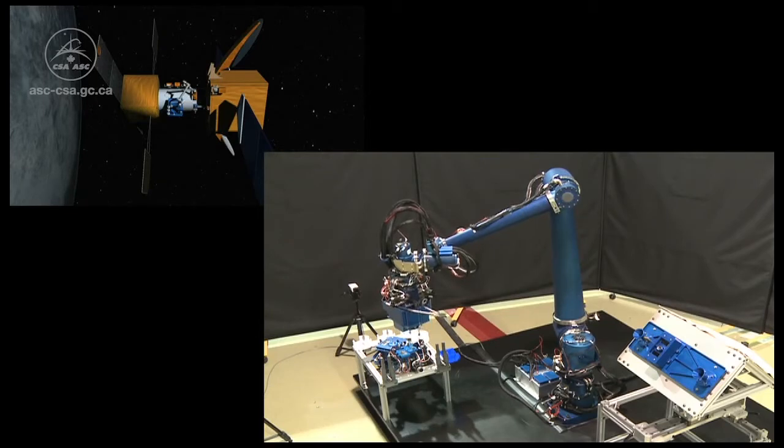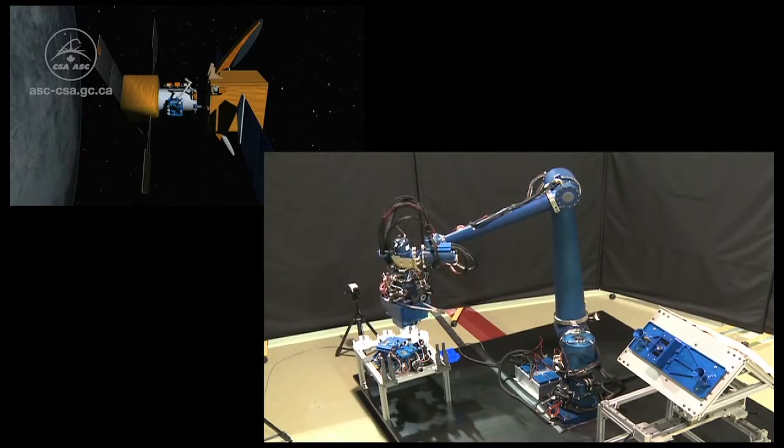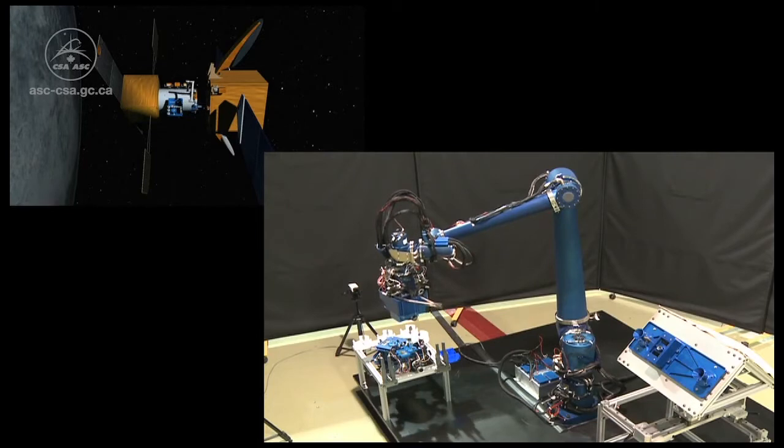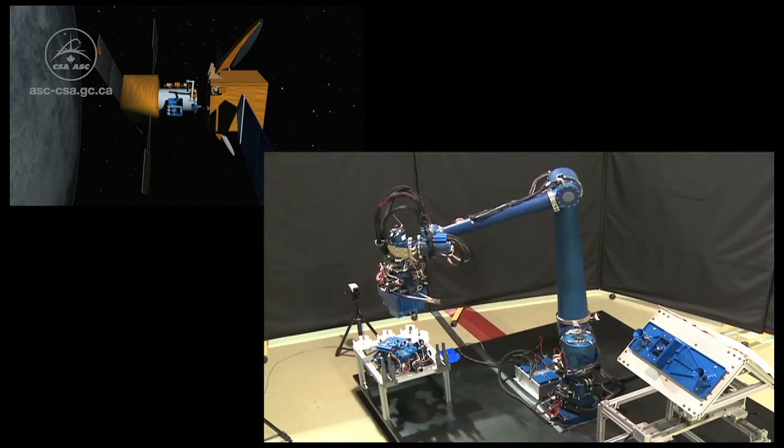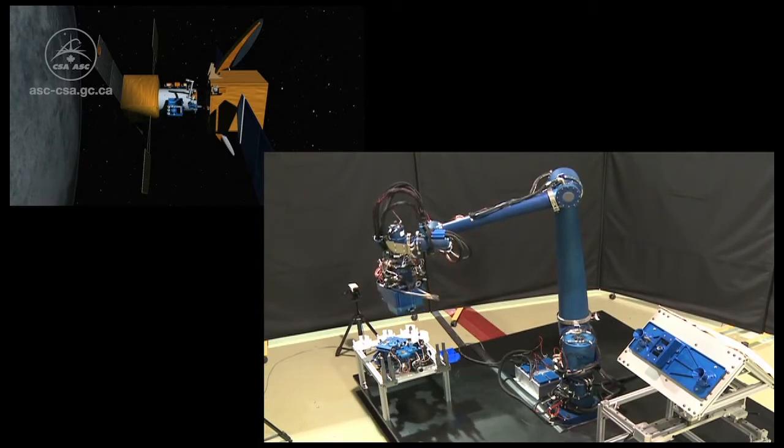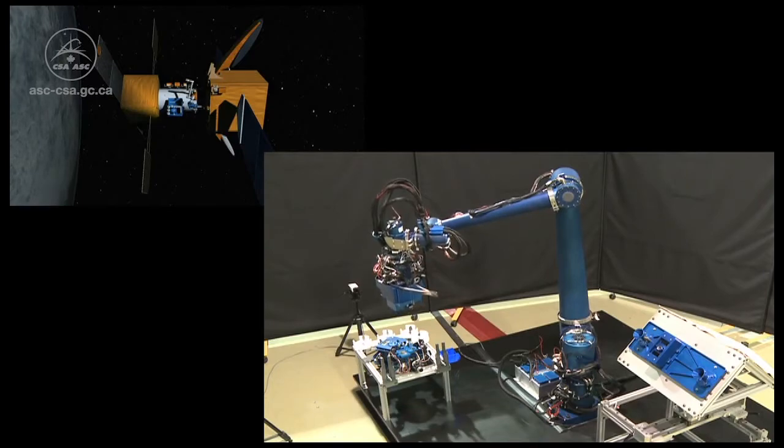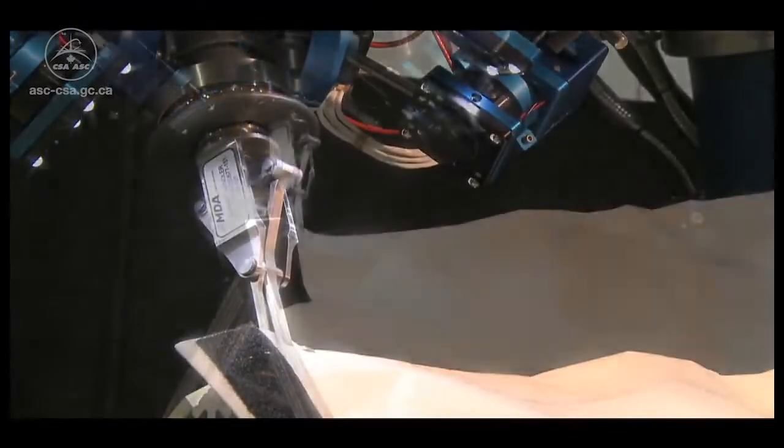The testbed will demonstrate the ability to service a range of spacecraft. Outfitted with specialized tools, the Next Generation Small Arm will perform a variety of intricate servicing tasks, including removal of fittings and thermal blankets.